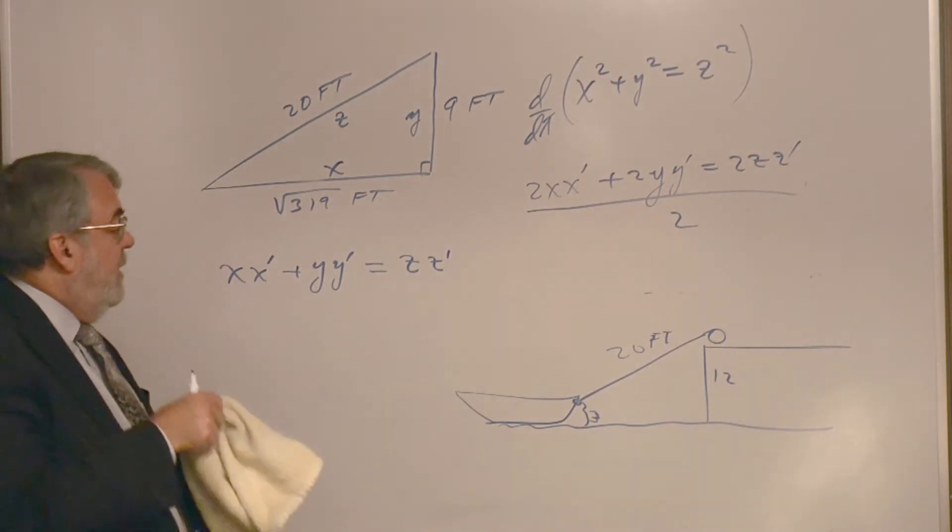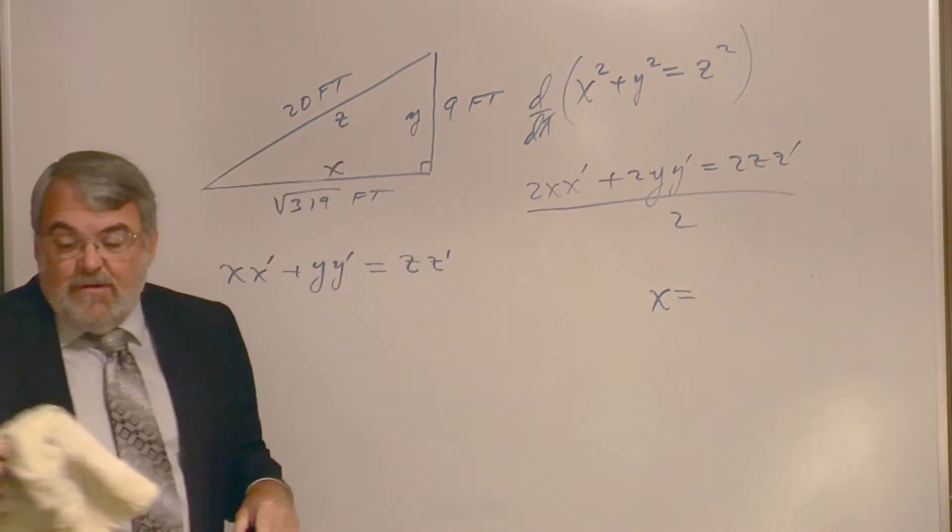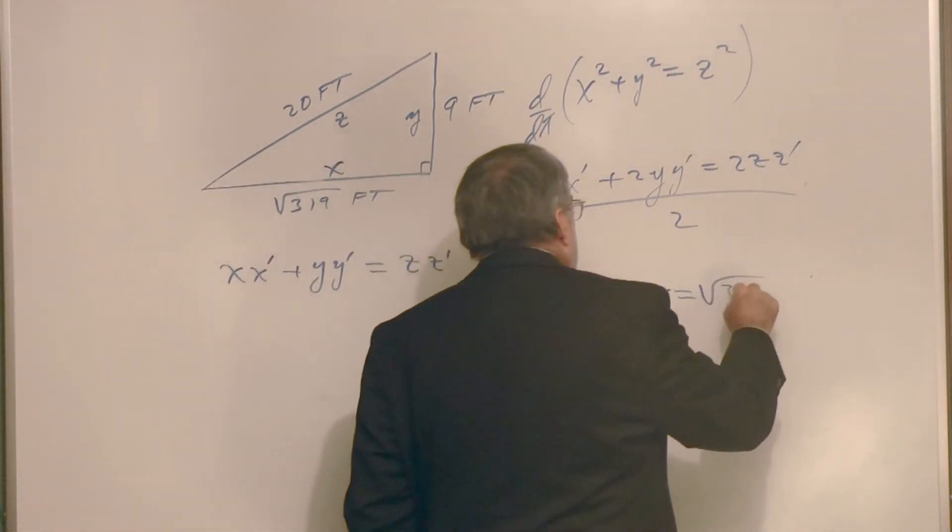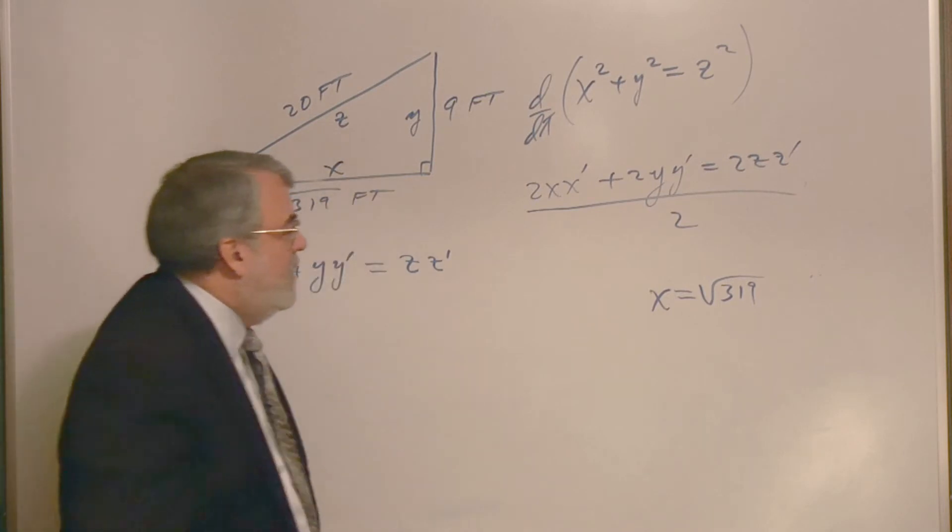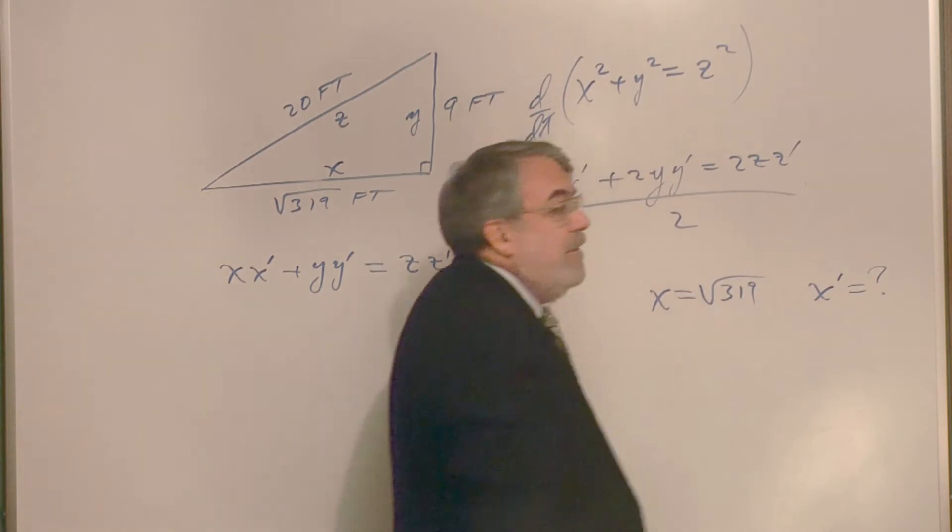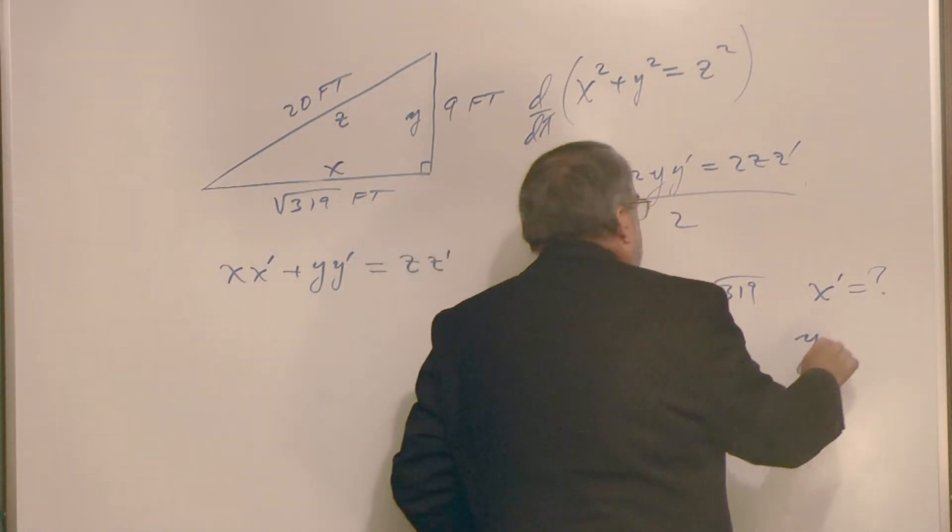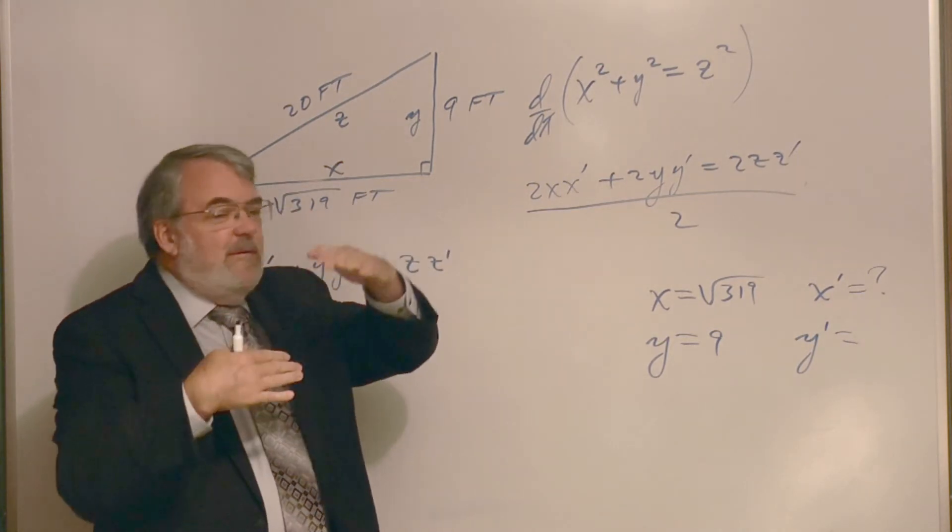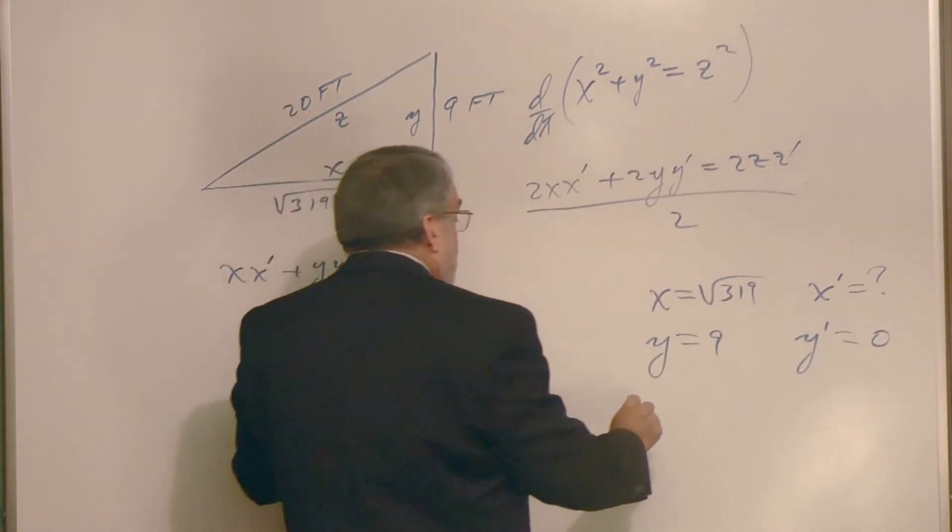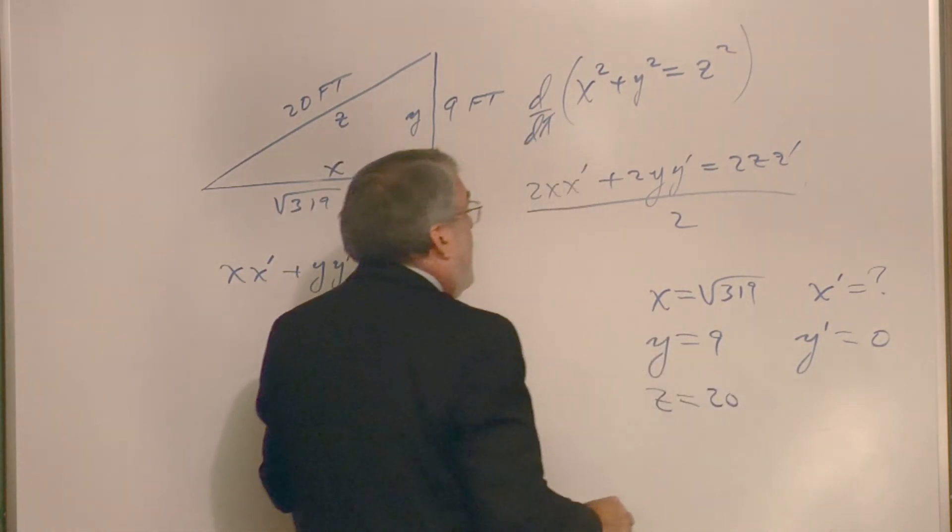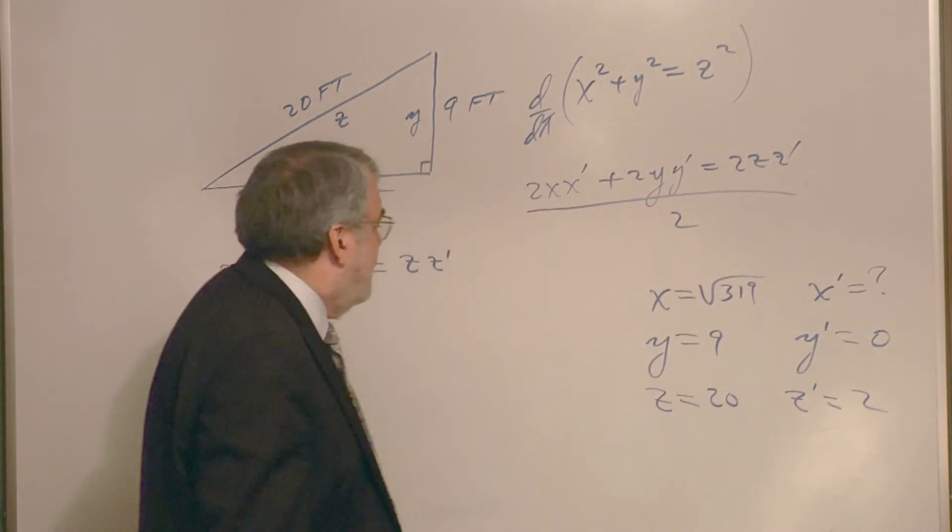Now then, let's see. I guess I can erase my wonderful artwork here. And x, we did need to calculate this. X is the square root of 319. X prime. Actually, that's what we're looking for, right? Because we want to know how fast is the boat moving toward the dock horizontally. So x prime is our unknown value. That's what we're going to solve for. As far as y, y is at 9 feet. And y prime is not changing. In other words, that 9 feet never changes, so the rate of change with respect to time is 0. This derivative is 0. Y prime is 0. And then, let's see. Z, at this moment in time, is 20 feet long. And the speed of the rope is a constant 2 feet per second. So z prime equals to 2.